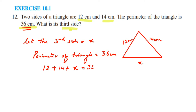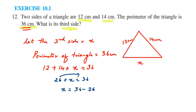12 plus 14 is 26, so 26 plus x is equal to 36. I'm going to transpose 26 to the other side. Since 26 is in addition with x, when you transpose it to the other side it becomes subtraction. So x is equal to 36 minus 26, which gives x equal to 10. Therefore, the third side of the triangle is equal to 10 centimeters.